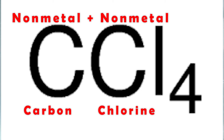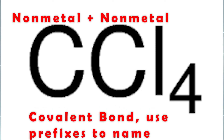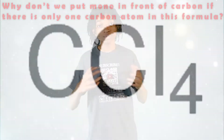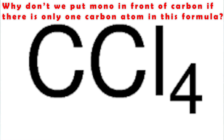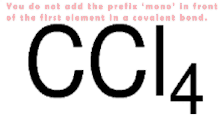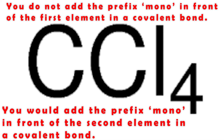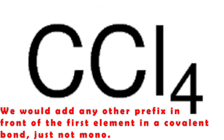Let's take a look at another chemical formula: CCl4. The carbon in this formula is a non-metal, and chlorine is a non-metal as well, which lets us know it is a covalent bond and that we will use prefixes to name it. There is one carbon atom in this formula, so its name would be carbon. Now, why don't we put mono in front of carbon if there is only one carbon atom? The reason is that you don't add the prefix mono in front of the first element in a covalent bond — you would only add mono in front of the second element. We would add any other prefixes in front of the first element, just not mono.